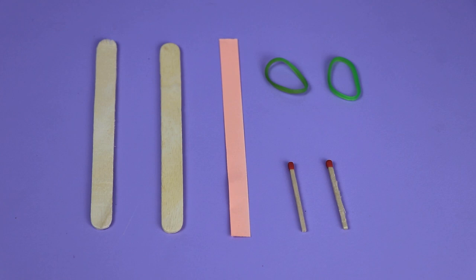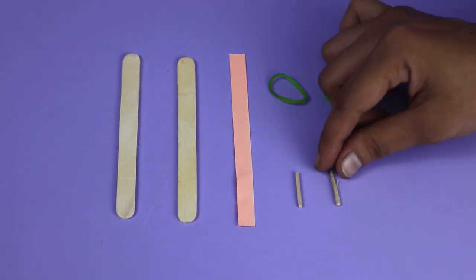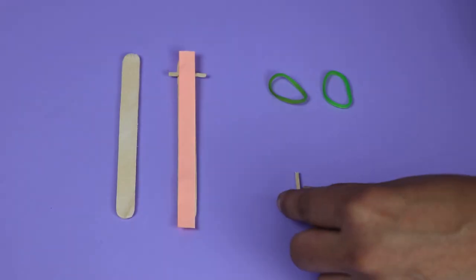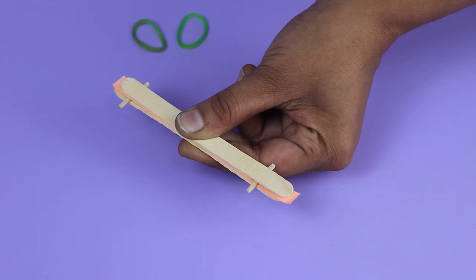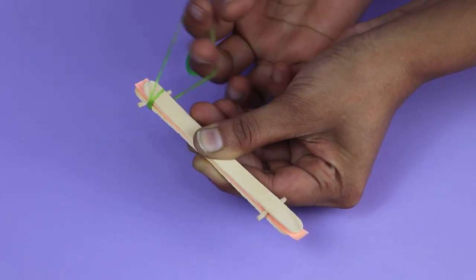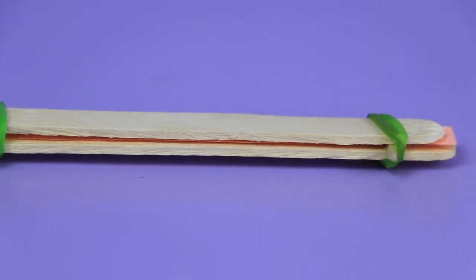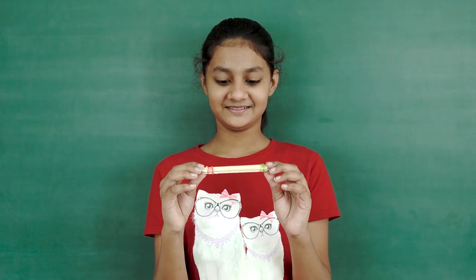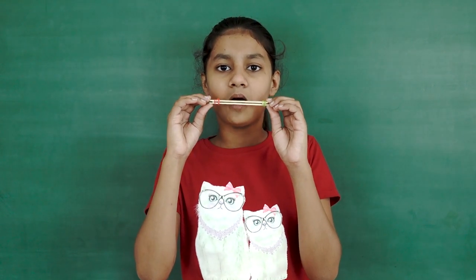For this activity, we need two ice cream sticks, a thin paper strip, two rubber bands, and two match sticks. Place a paper strip on the ice cream stick, then place another stick on top. Tie rubber bands on both ends. Place two match sticks between the ice cream sticks towards the ends, next to the rubber bands. Blow through the two sticks. We can ask the students where the sound is originating from. Since students are already familiar with types of motion, they might respond that the vibrational motion of the paper strip is producing sound.